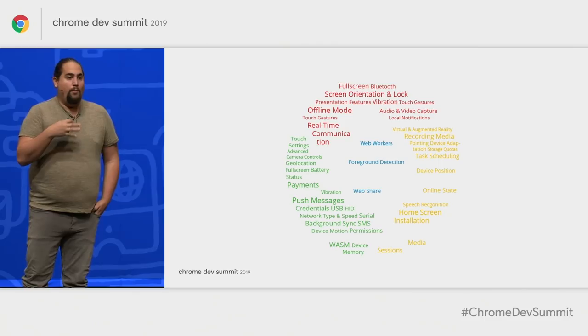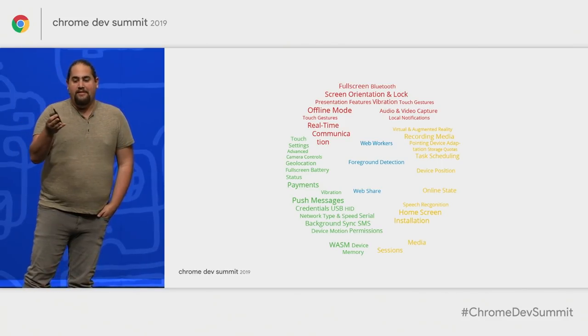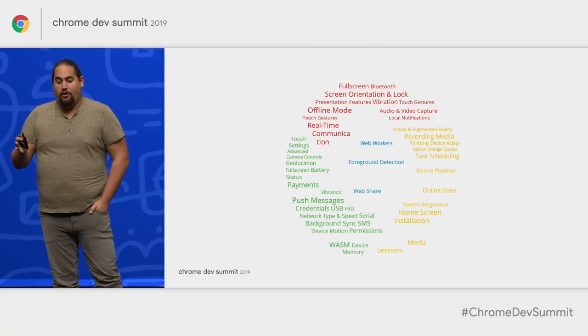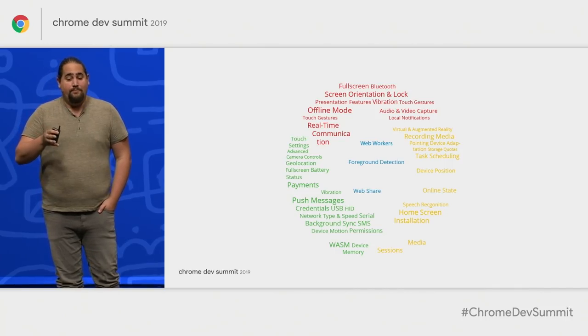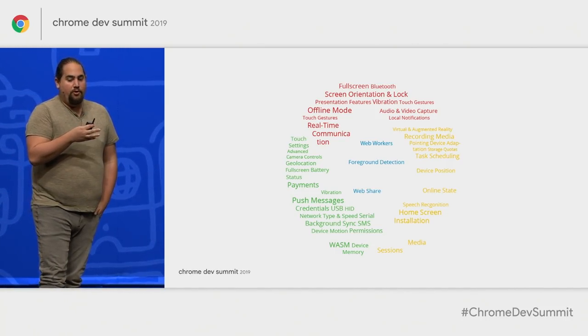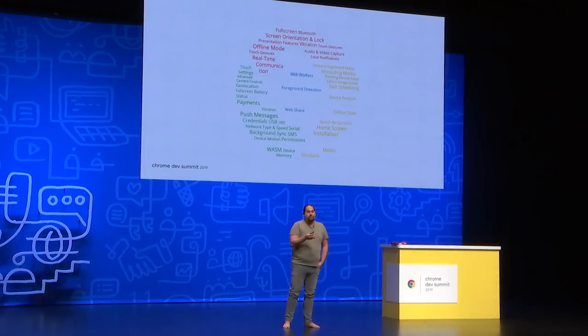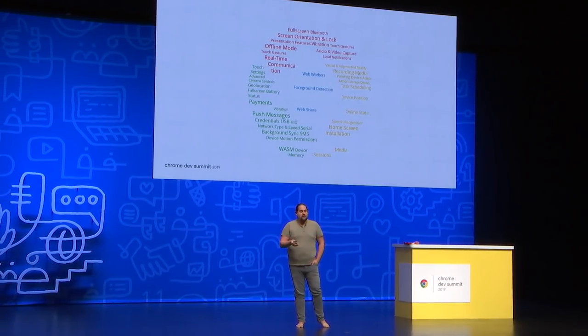But there are still gaps in what we can solve with the web today. In the worst case, this means developers are not building for the web at all, or they're relegating it to a second-class experience. For those who do want to build for the web but need native capabilities, they're forced to bundle web apps in native wrappers, effectively shipping their own custom browsers to users, exploding the size of their apps, and taking on the security and maintenance burden of keeping both the browser and native wrapper up to date.